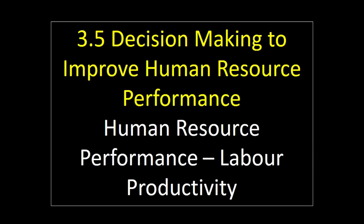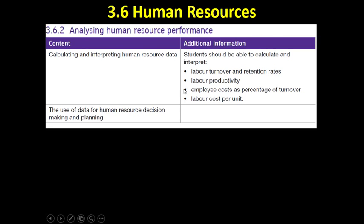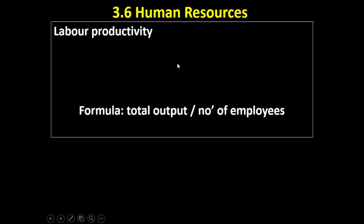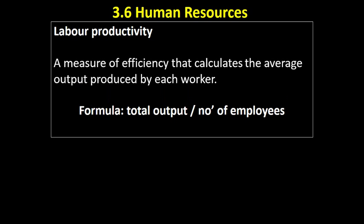Hello there, this is Mr Edmonds. This video looks at labour productivity and it's the second in this series of videos looking at these measures of human resource performance. So labour productivity is a measure of efficiency that calculates the average output produced by each worker.